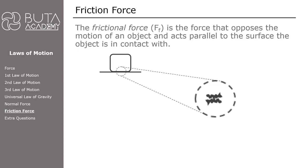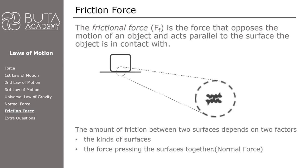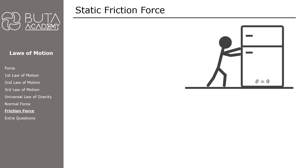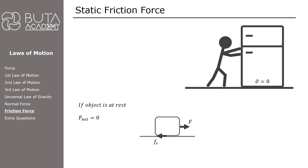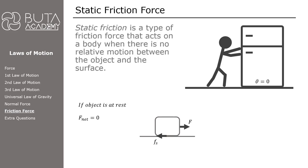The friction force is the force that opposes the motion of an object and acts parallel to the surface the object is in contact with. The amount of friction between two surfaces depends on two factors: the kind of surfaces, and the force pressing the surfaces together — in other words, the normal force. Let's imagine a situation where we are applying a small force to push a fridge, but the fridge is too heavy and remains at rest. We know from the first law of motion that if an object is at rest, the net force applied on it is equal to zero, which means there is another force opposing the force we applied and nullifying its effect. This opposing force is the force of friction. For this specific case, friction force acting on a stationary object is also known as static friction force. Static friction is a type of friction force that acts on a body when there is no relative motion between the object and the surface.